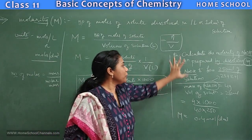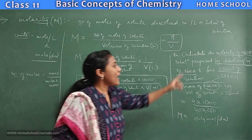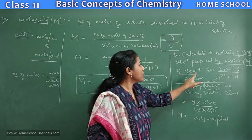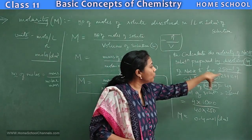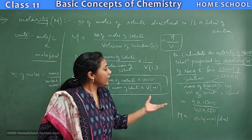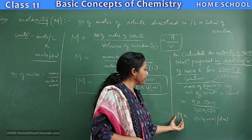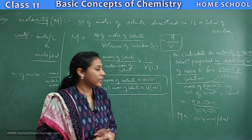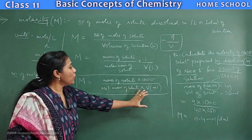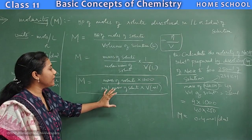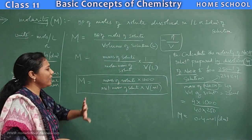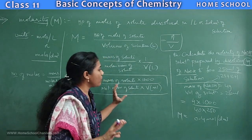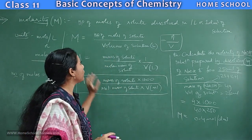In molarity problems, mass and volume are typically given; you calculate molar mass yourself. Alternatively, molarity and volume may be given and you calculate mass. Any one variable can be the unknown. Be careful with the 1000 factor — include it only when volume is in mL.